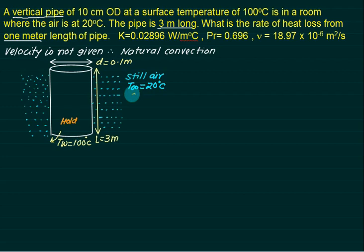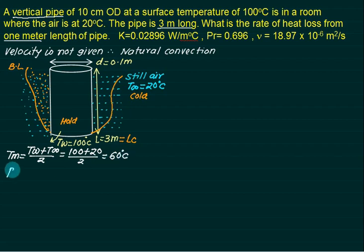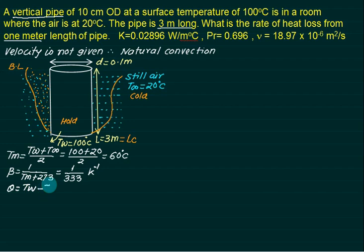The boundary layer grows from the bottom to the top — zero thickness at the bottom, increasing upward. The characteristic length is measured parallel to the boundary layer, so Lc = 3 m. Mean temperature = (100 + 20)/2 = 60°C. Since the fluid is air, β = 1/(Tm + 273) = 1/(60 + 273) = 1/333 per Kelvin. Excess temperature θ = 100 − 20 = 80°C.